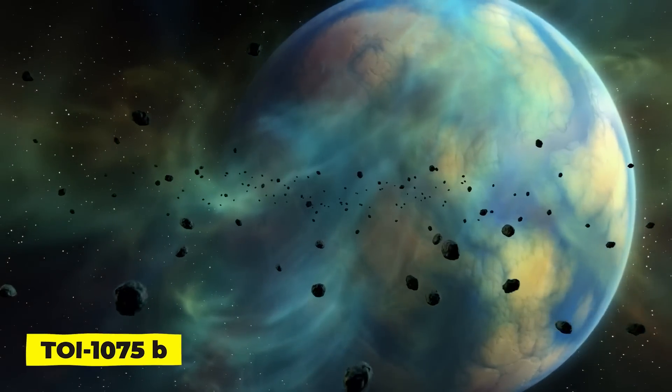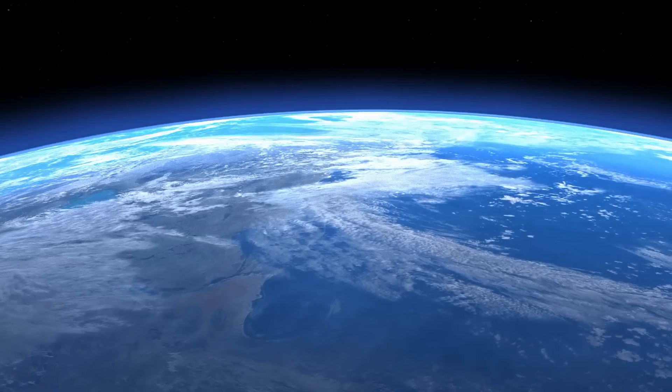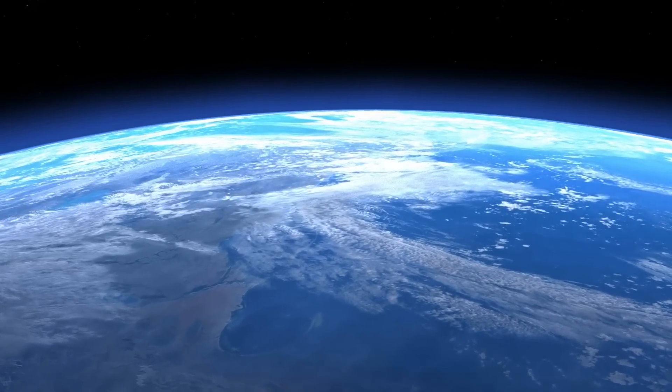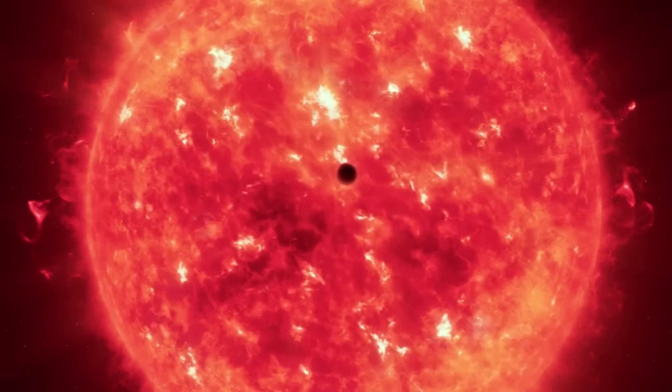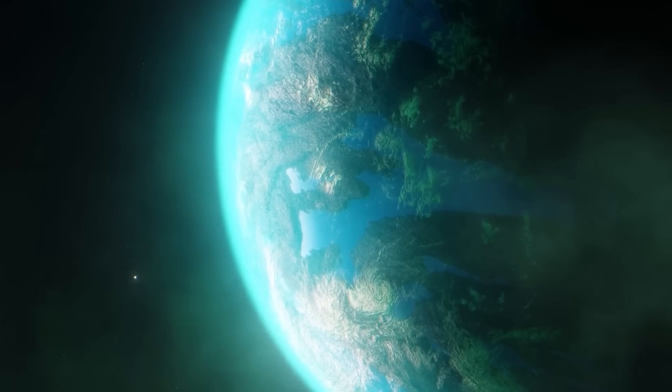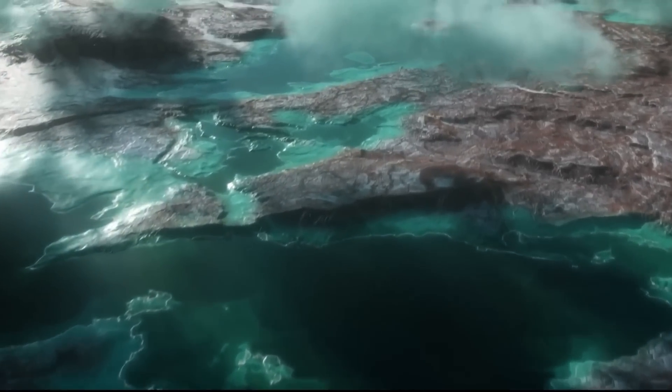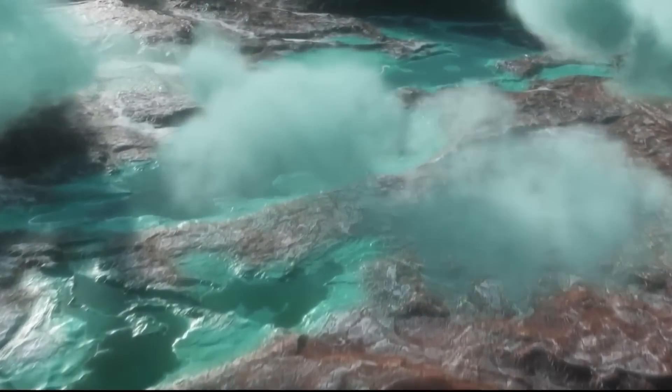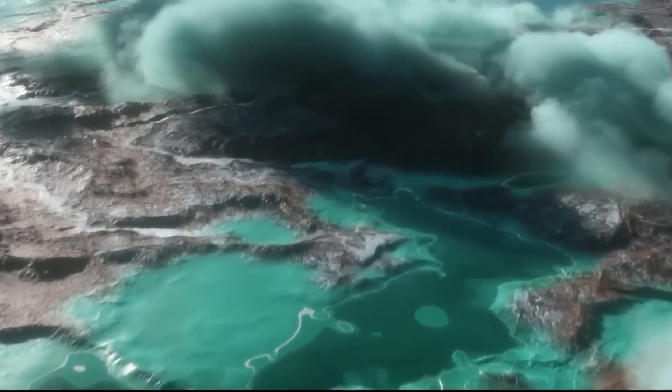TOI 1075b, one of the most massive super-Earths so far detected. This planet, which has a mass almost 10 times that of Earth, revolves around a dim red-orange star 200 light-years away. Only 14 and a half hours are needed to complete one orbit around the star. The planet is extraordinarily hot due to its ultra-short orbit, with an estimated temperature of 1922 degrees Fahrenheit, that's 1050 Celsius.